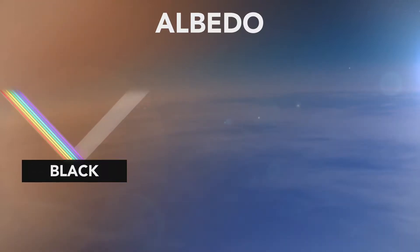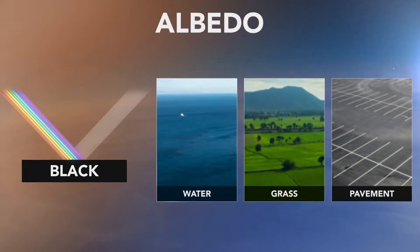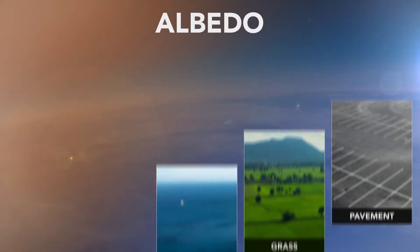In contrast, dark surfaces are not very reflective, such as water, grass, or black pavement. You wouldn't want to walk barefoot on black pavement on a hot summer day because this surface is absorbing just about all of the radiation that hits it instead of reflecting it, making it very hot.